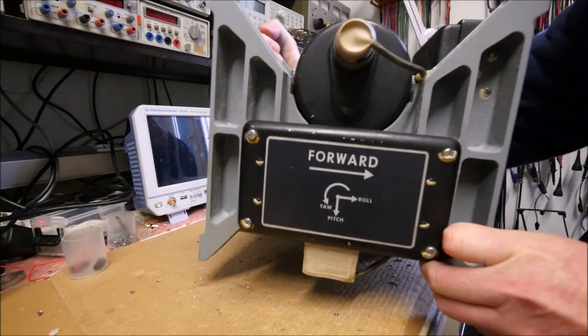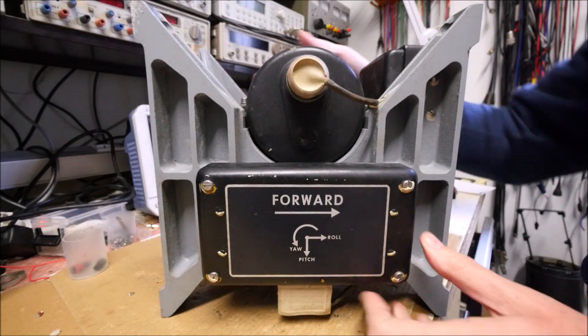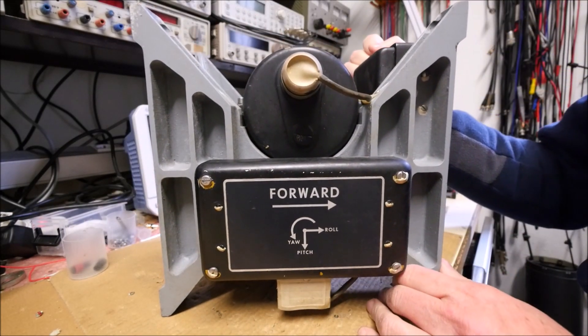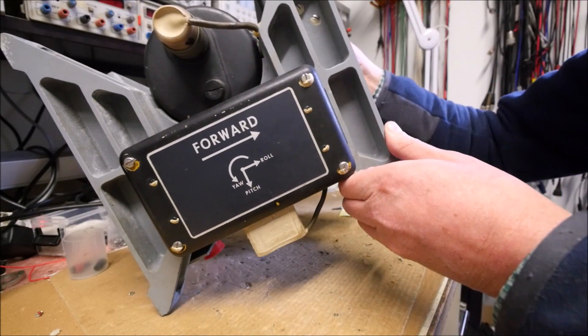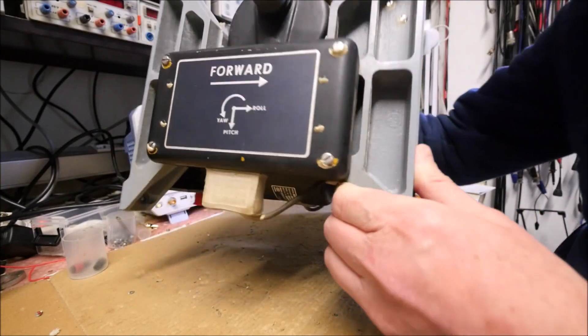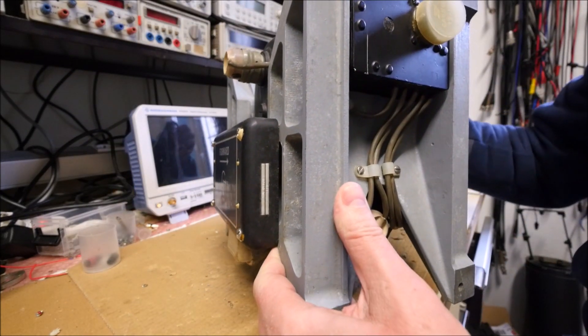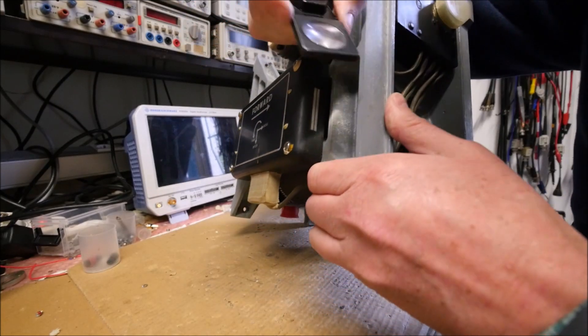And there is the second potted module. So it will be very difficult to see what is inside. So there is something written here. On that side here.